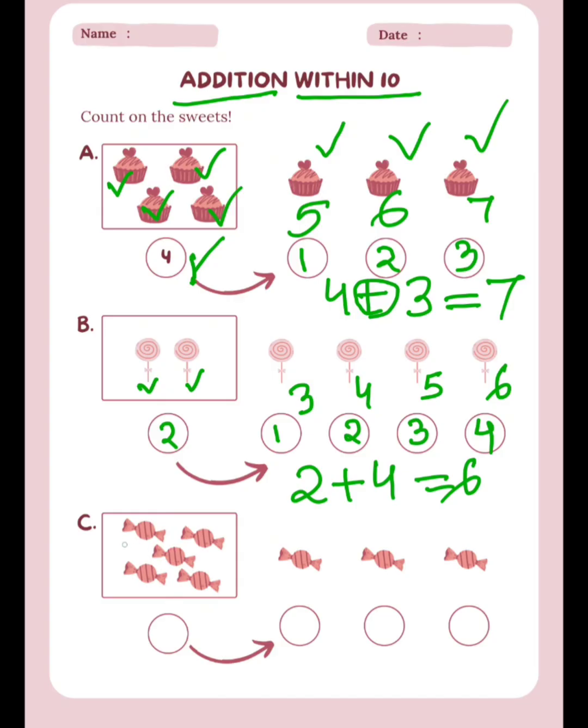So here you are going to count how many candies? 1, 2, 3, 4, and 5. You are going to write here 5. And how many more candies? 1, 2, 3. So we are going to represent it 5 plus 3. How to add? Up to 5, 6, 7, 8. I hope you understood.